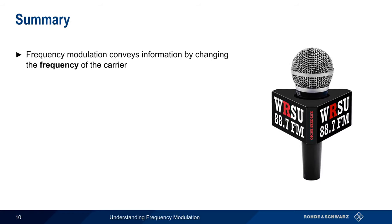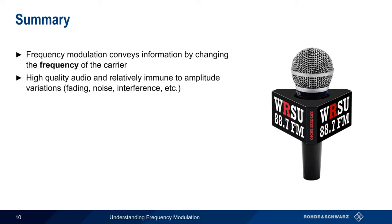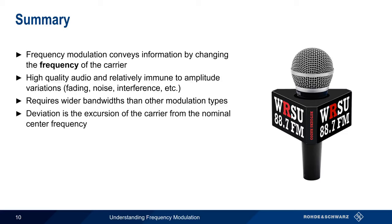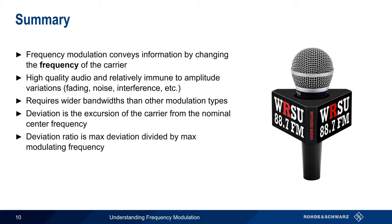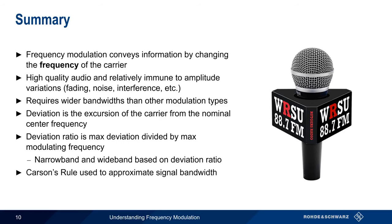In summary, frequency modulation carries information by changing the frequency of the carrier. The greatest advantages of FM are that it provides high-quality audio and is relatively immune to amplitude variations caused by things like fading, noise, and interference. It does, however, require significantly wider bandwidths than other analog modulation types. An important concept in FM is deviation, which is the distance that the carrier moves from the nominal center frequency. Deviation ratio is the maximum deviation divided by the maximum modulating frequency, and FM is often divided into narrowband and wideband based on this deviation ratio. Finally, we can use Carson's Rule to approximate the bandwidth of an FM signal. This concludes our presentation, Understanding Frequency Modulation.